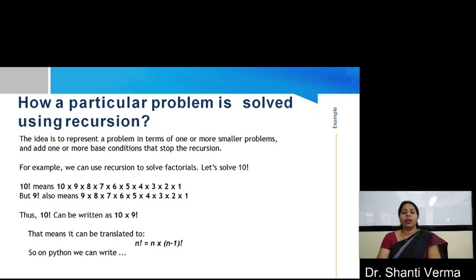So, factorial 10 can be written as 10 into factorial 9. You can see that when we are calculating 9 factorial, with the help of 9 factorial, we are easily able to calculate 10 factorial.